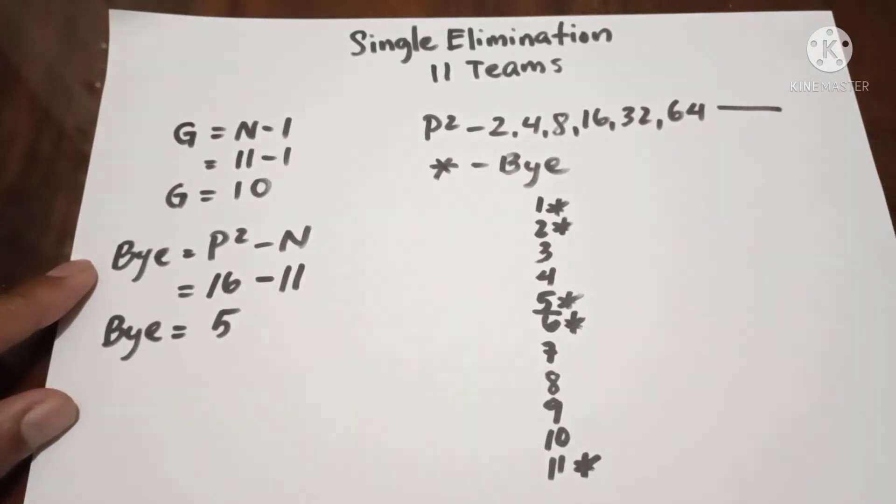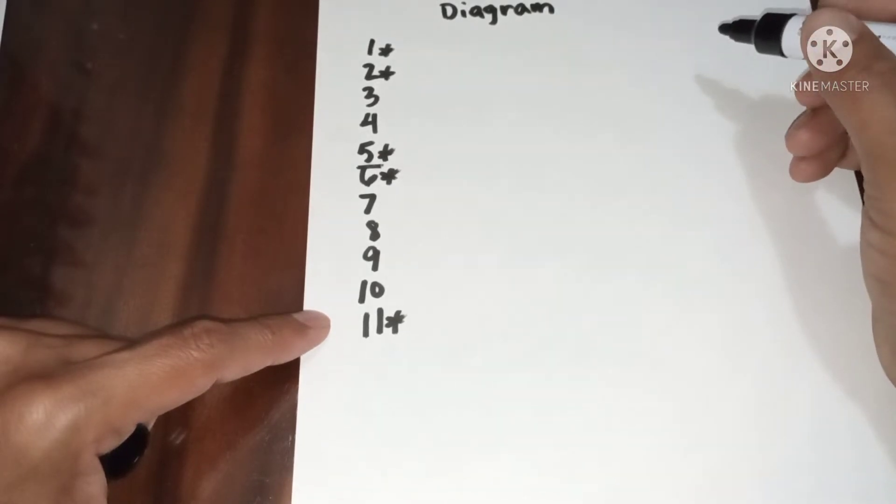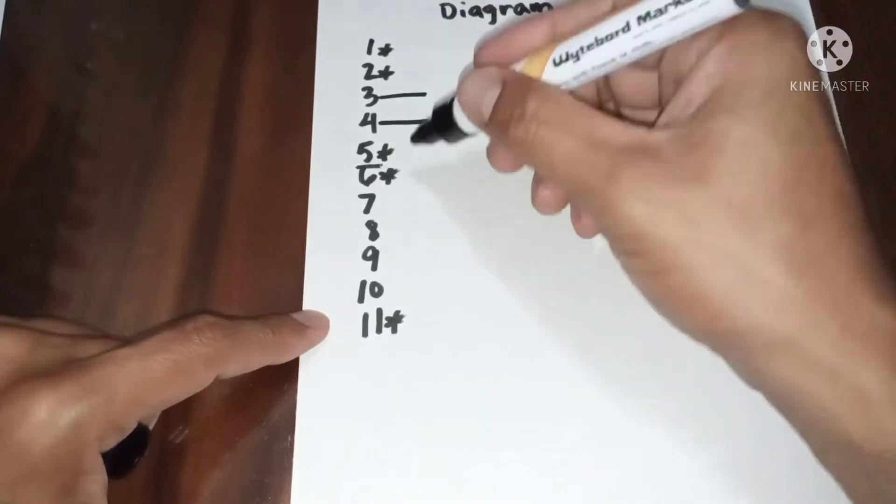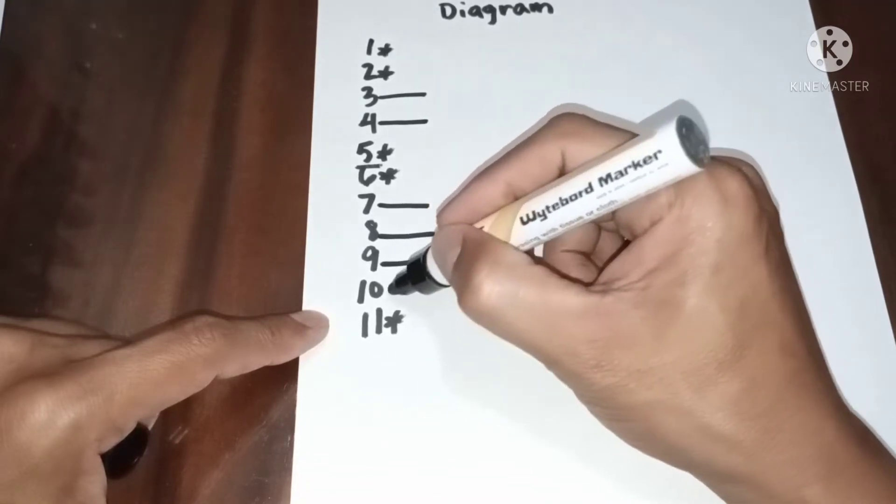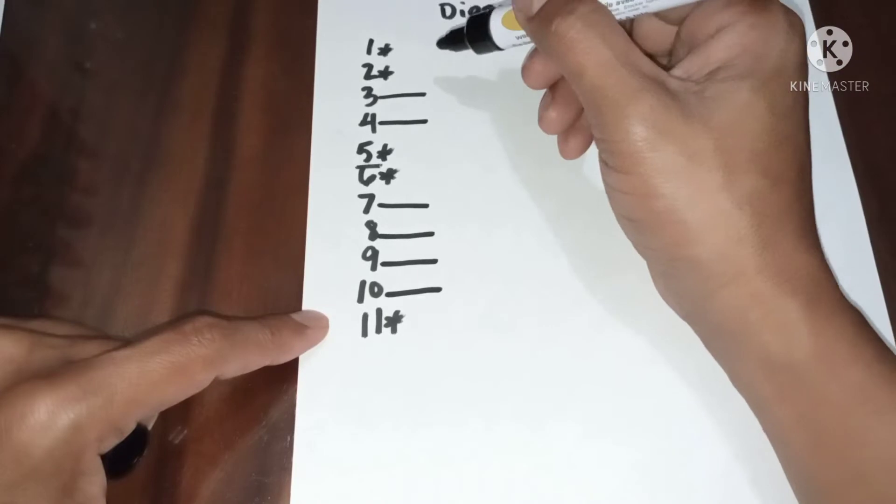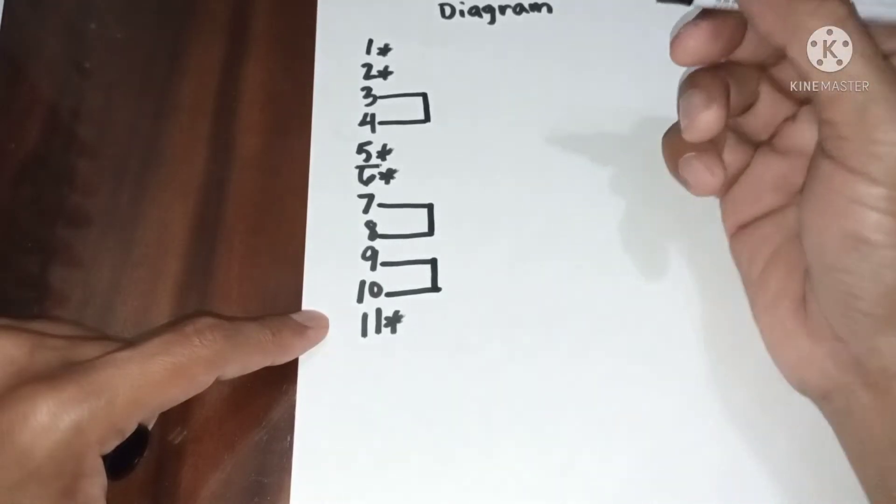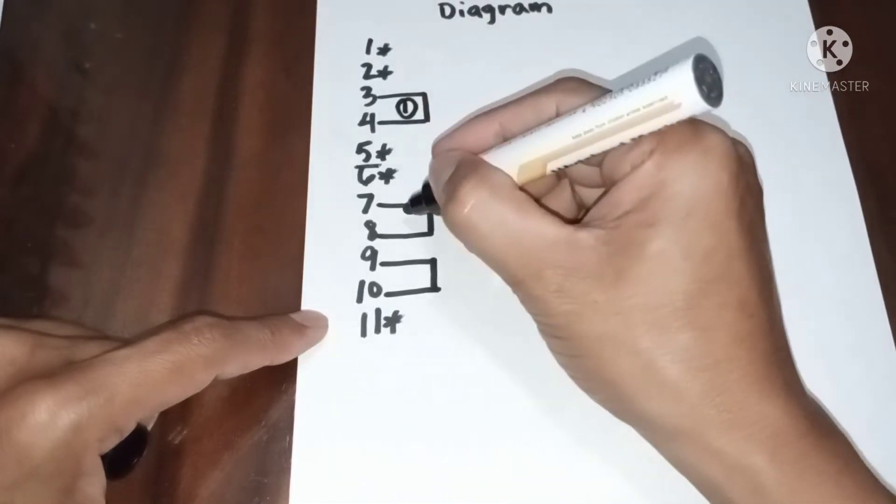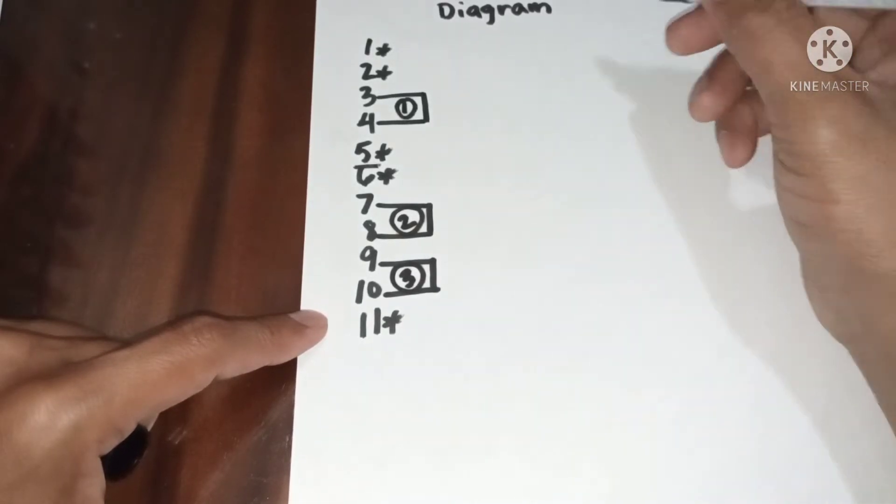Now let's proceed to diagram and game schedule. Now let's proceed to first round: 3 and 4, 7, 8, 9, and 10. Now let us have the vertical line from the top. Next is the game number. This will be game 1, game 2, game 3. Now let us have the result.